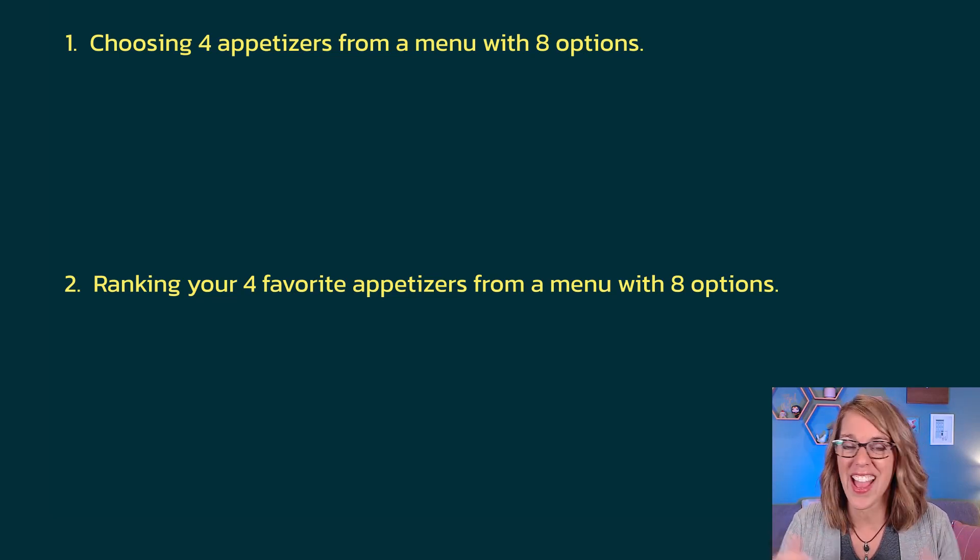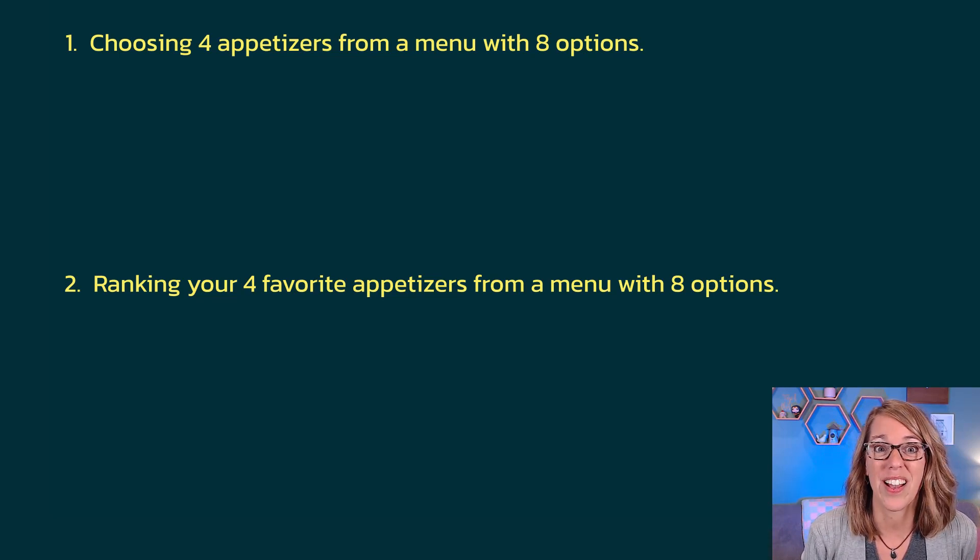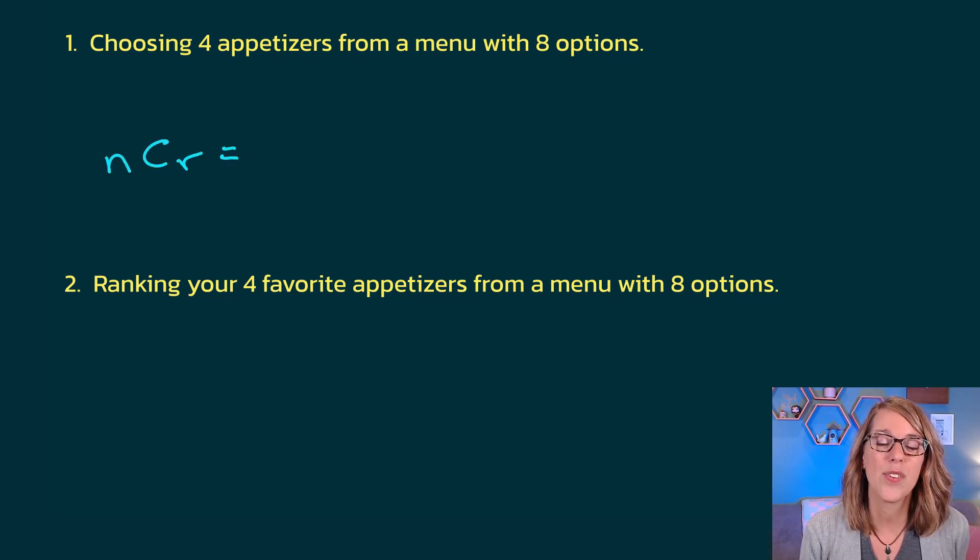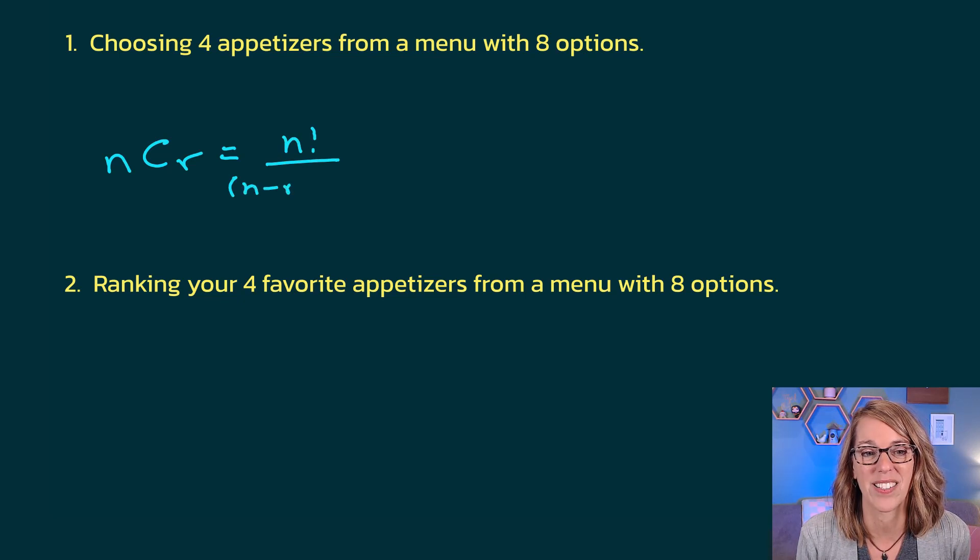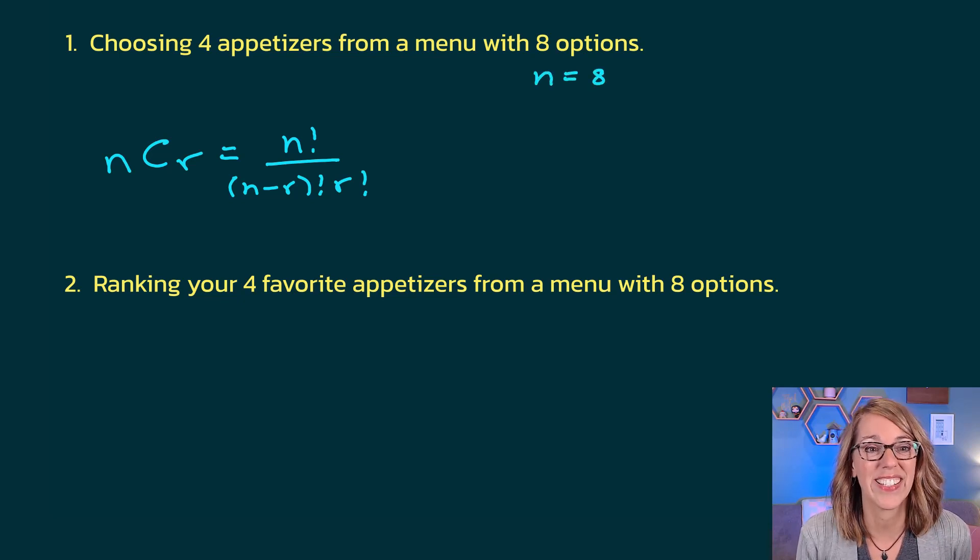In the first one, order doesn't matter. You're sitting at a table with your friends at a restaurant. You guys want to order four of these. It doesn't matter how they show up. So order doesn't matter, and we're going to be doing a combination, so NCR. If you were using the formula, it would look like this. So it would be N factorial divided by (N minus R) factorial times R factorial. For our example, N is equal to the total number of options, which is 8, and R is the number that we're choosing, which is equal to 4.